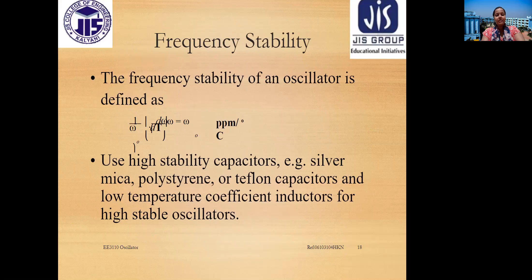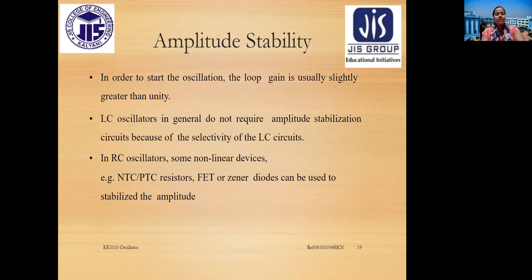Frequency stability of an oscillator is defined as 1 over omega times d-phi/d-omega. High stability can be achieved using silver mica, polystyrene, or Teflon capacitors and low temperature coefficient inductors. For amplitude stability, the loop gain is usually slightly greater than unity to start oscillation. LC oscillators generally do not require amplitude stabilization circuits due to the selectivity of the LC network, but RC oscillators may use non-linear devices such as NTC, PTC resistors, or Zener diodes.